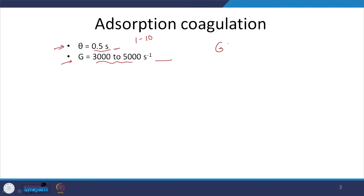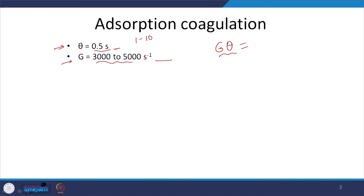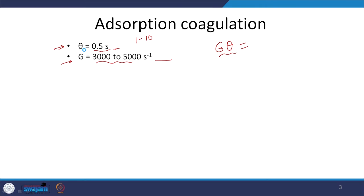In general we are concerned with G·theta, but it is not that this is a single equivalent value. Even though G·theta for adsorption coagulation might be comparable to sweep flow coagulation, we also need to be concerned about G and theta as independent variables, because they will affect the kind of mechanism and how effectively it proceeds. That is something to keep in mind.